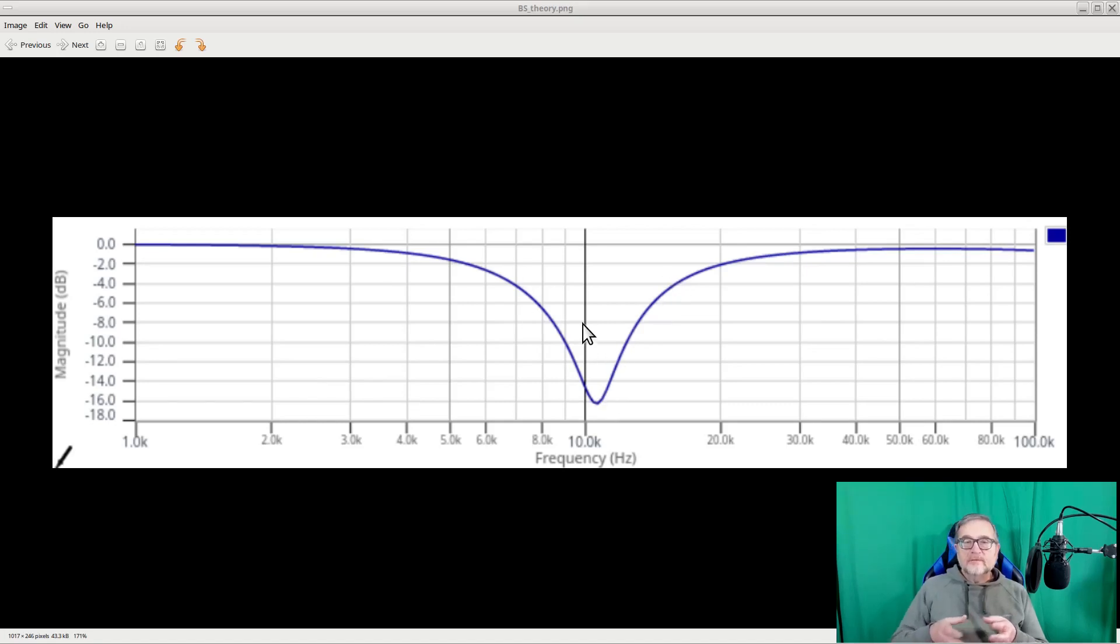The corresponding first-order filter would have instead a slope of only 20 dB per decade or 6 dB per octave. The filter we will study today, since it is based on the Sallen-Key topology, will have a slope of 40 dB per decade since it is a second-order filter.